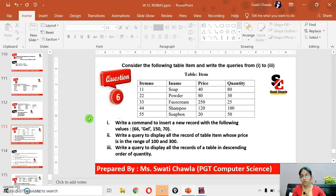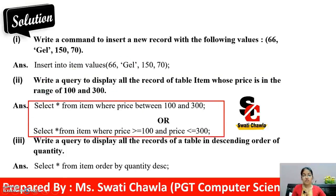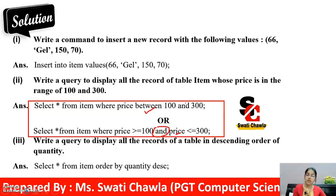This is the solution. For the second part with the price range, we used the BETWEEN operator. You can also write it as: SELECT * FROM item WHERE price >= 100 AND price <= 300. Note that in this alternate form, the column name 'price' must appear twice. You can use whichever method you find easier and are less likely to make mistakes with.